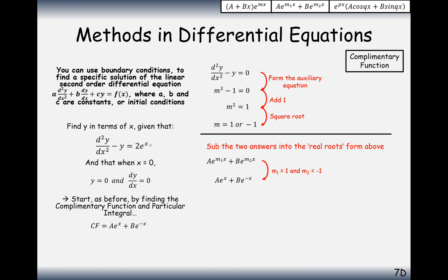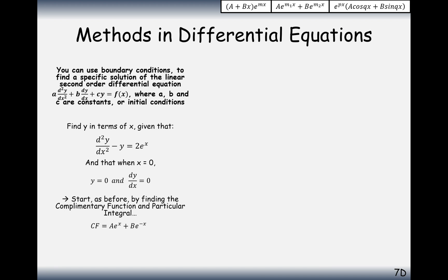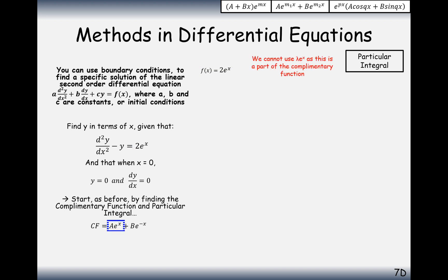Now, there are two e to the x on the other side, and there's an overlap between the complementary function — which has Ae to the x — and the right-hand side, because the powers on x are exactly the same. If it were e to the 3x or e to the 4x there'd be no overlap, but because it's exactly the same power, there is an overlap between the particular integral and the complementary function. So we have to multiply our suggestion by x. You'd normally suggest lambda·e to the x, but since it's included in the complementary function, you multiply that by x.